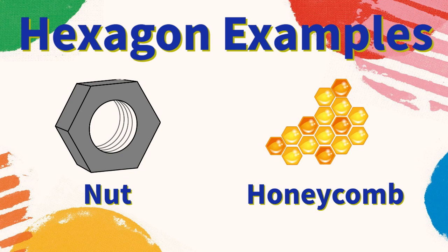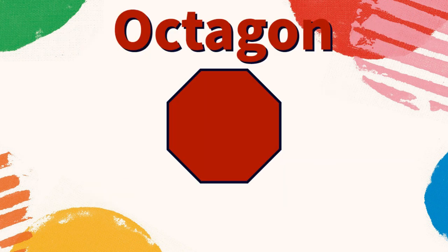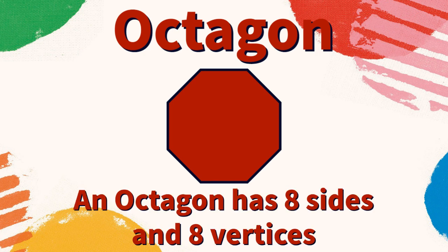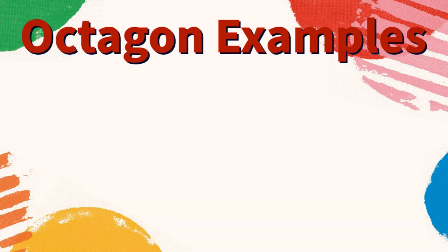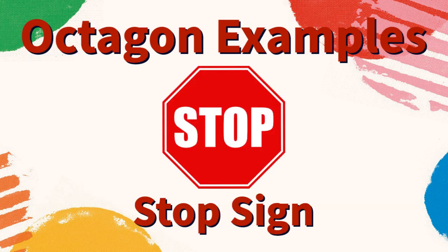Octagon: an octagon has eight sides and eight vertices. What are some examples of octagons? A stop sign is an octagon. Are there any other examples you can think of?